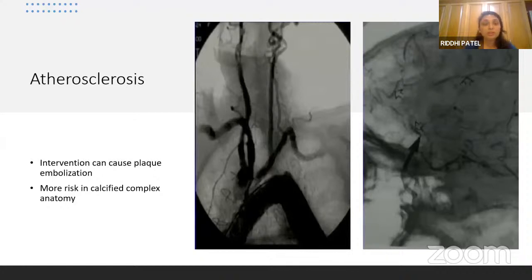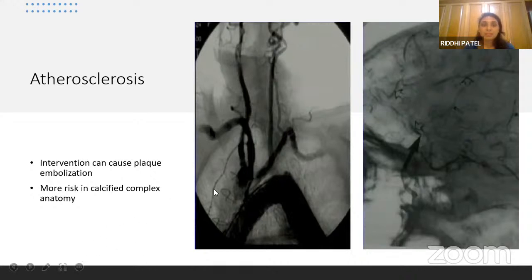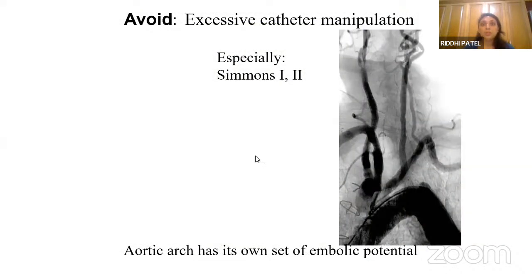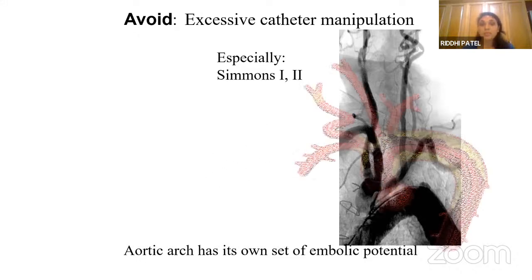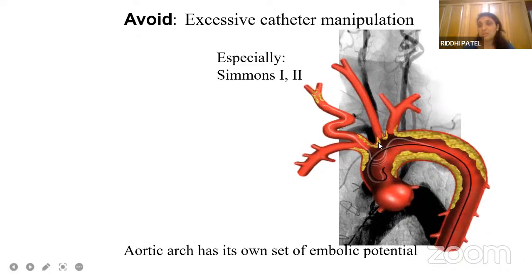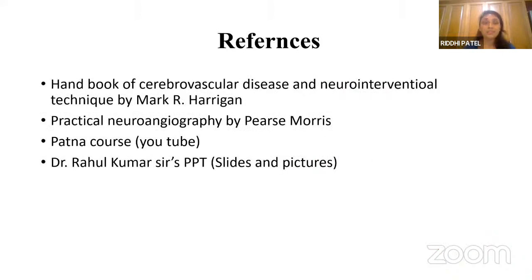The most important complication related to cannulation is atherosclerosis. In my first case, when I was advancing the diagnostic catheter, an atherosclerotic plaque went into the MCA. The patient had a stroke on the table but recovered afterward after thrombectomy. We have to be careful when doing this type of procedure - excessive catheter manipulation should be avoided, and Simons-type catheters are very prone to this type of complication. These are the references for my talk.